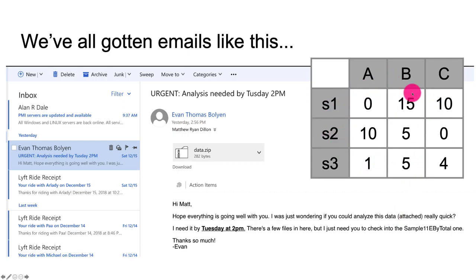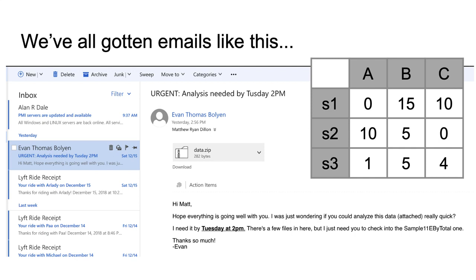This matrix of numbers. There appears to be a couple of things that maybe look like labels here — A, B, and C, and S1, S2, and S3. But there's no description anywhere in this email about what Evan has provided to me. Not only that, but there's also no explanation of what Evan needs. All we know is that he wants us to analyze this data and he needs it by Tuesday at 2 p.m.